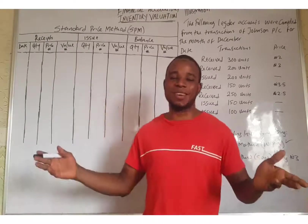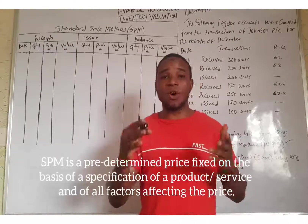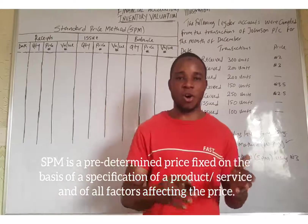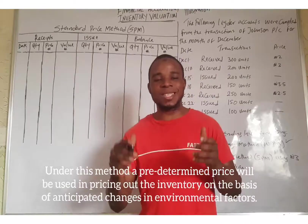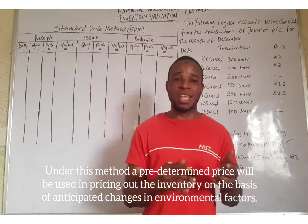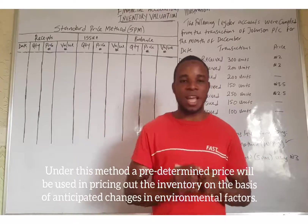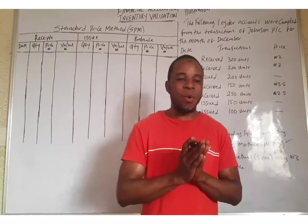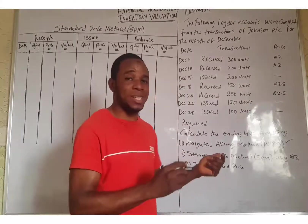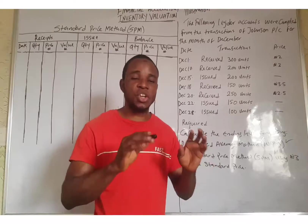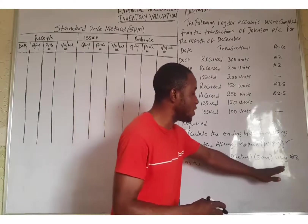Welcome back to this class. Let's start the second method, which is standard price. Standard price is a predetermined price fixed on the basis of a specification of a product or service and of all factors affecting the price. Under this method, a predetermined price will be used in pricing out all the inventory. When we want to use the standard price method, there must be a predetermined price after considering all the factors that can affect it.